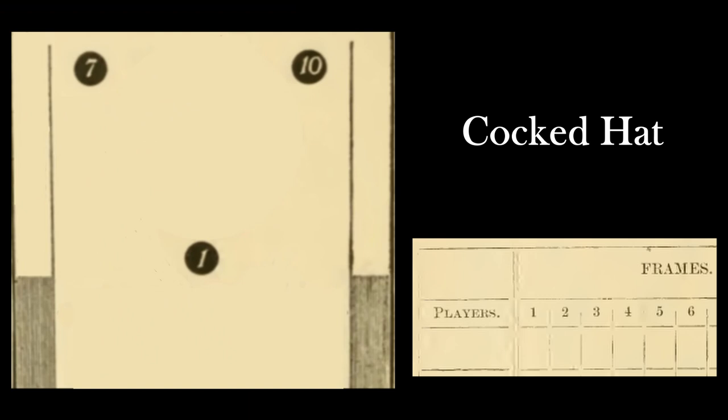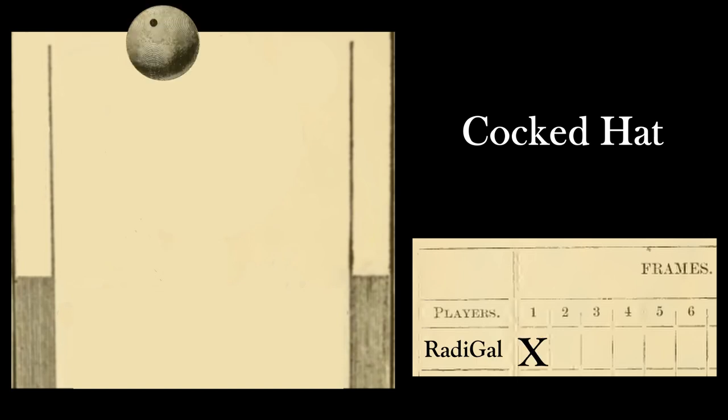The first game we're going to take a look at is called Cocked Hat. For this game, you leave the 1, 7, and 10 standing. The goal is to get a strike by knocking down all three pins, but there are no spares. However, your next two balls do count towards your strike, just like in regular ten pin bowling.